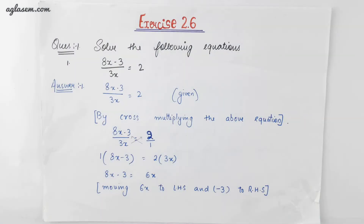Hello students, welcome back once again to our channel for the solution to your problems with Megha Goyal. Today we will solve the back exercise of chapter 2 of NCERT class 8. In this video we will cover exercise 2.6. This chapter deals with linear equations in one variable, where we will be dealing with equations having only one variable, that is either x, y, or z.